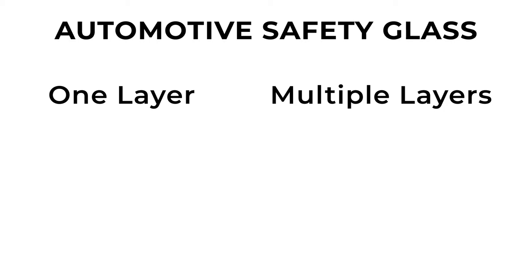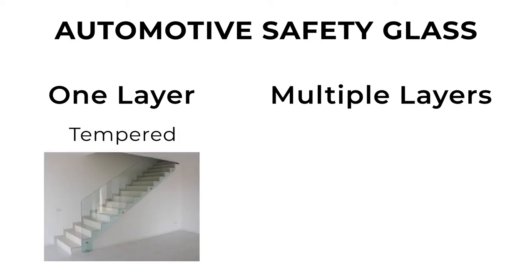The most common type of single-layered safety glass is called tempered glass. It's made by heating glass up to 1200 degrees Fahrenheit before rapidly cooling it down to room temperature in a process called quenching.